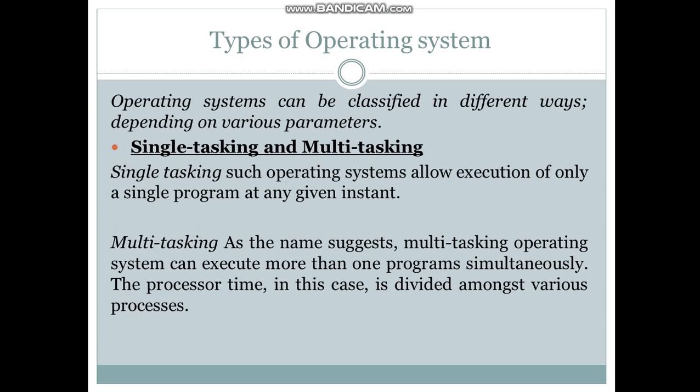Multitasking, as the name suggests, means many tasks or many operations can be executed simultaneously. The processor time is divided among each process. For example, if there are three processes to be executed simultaneously, the processor time will be divided equally among these three processes.